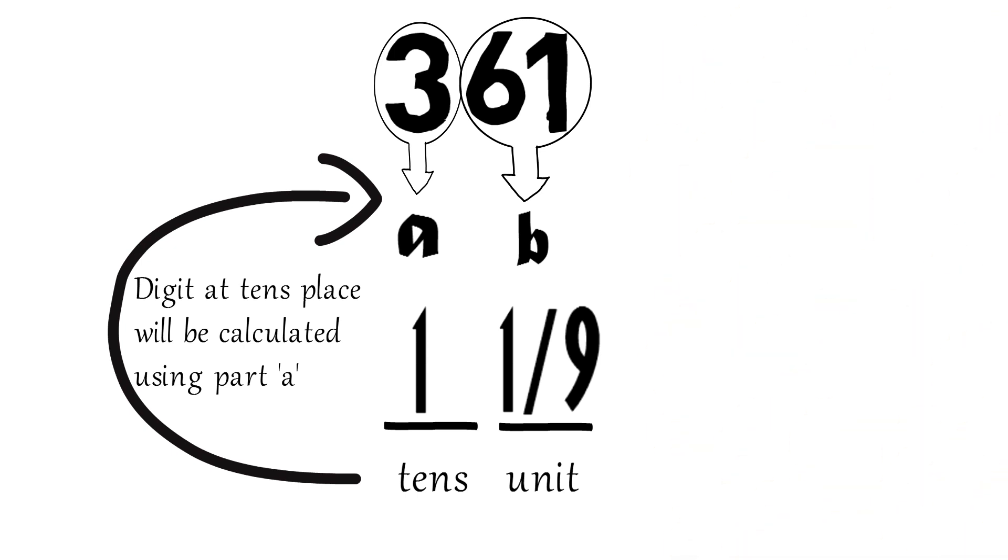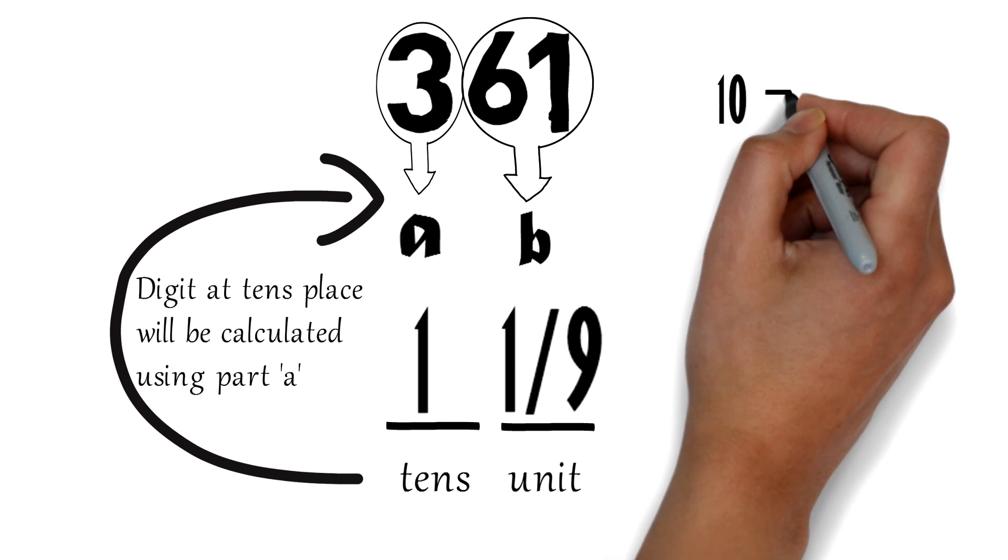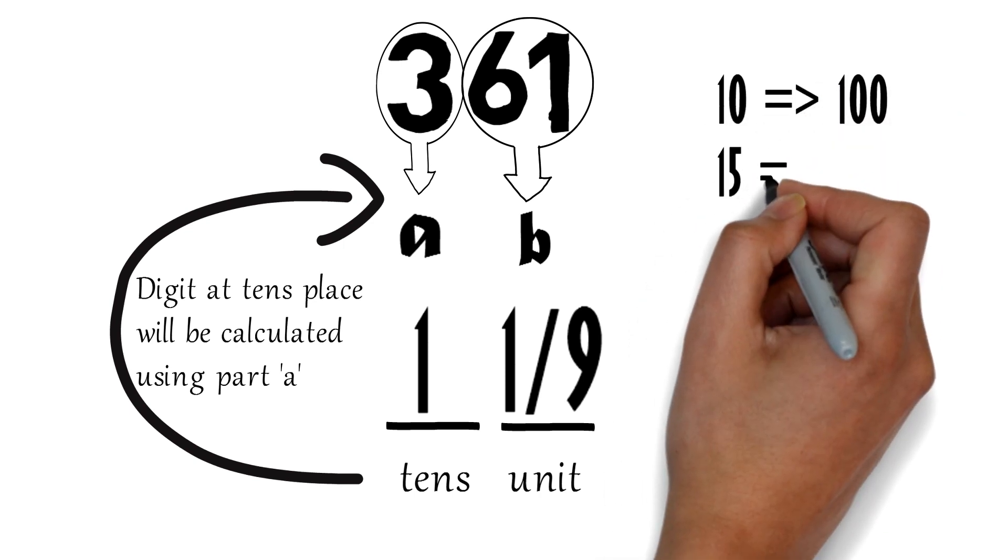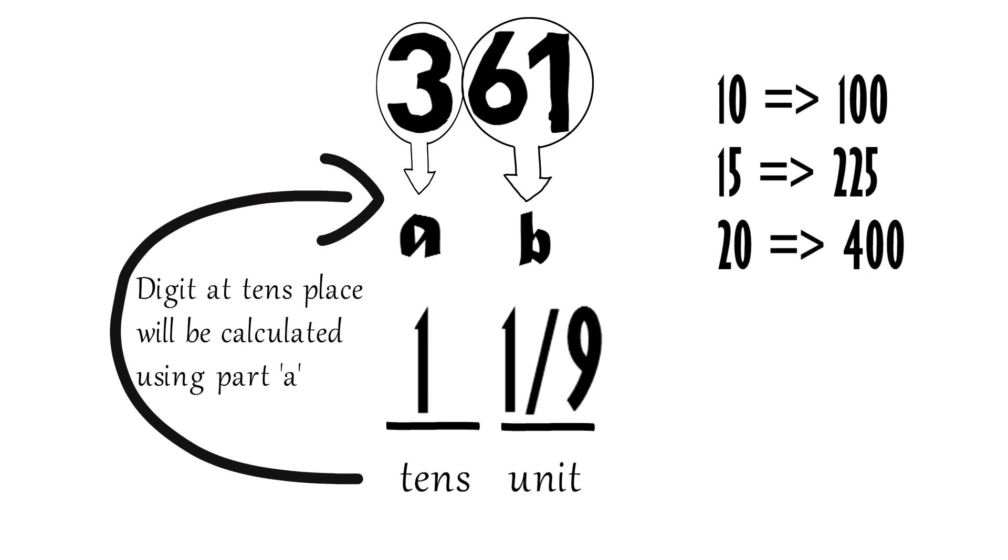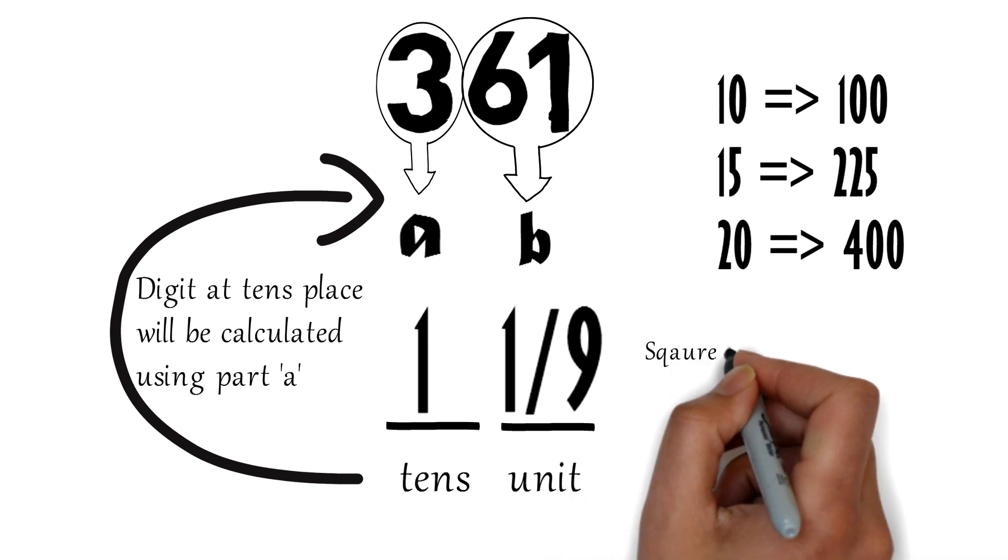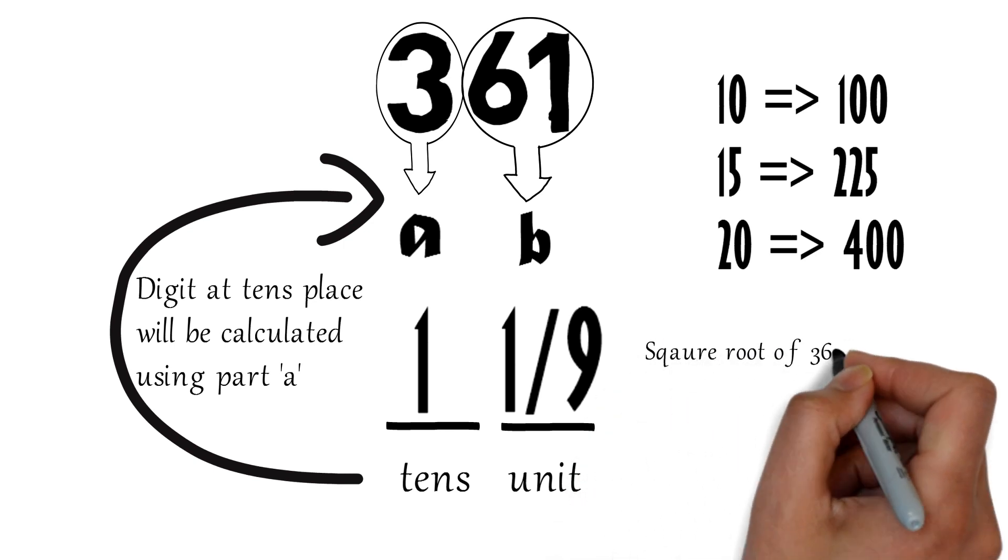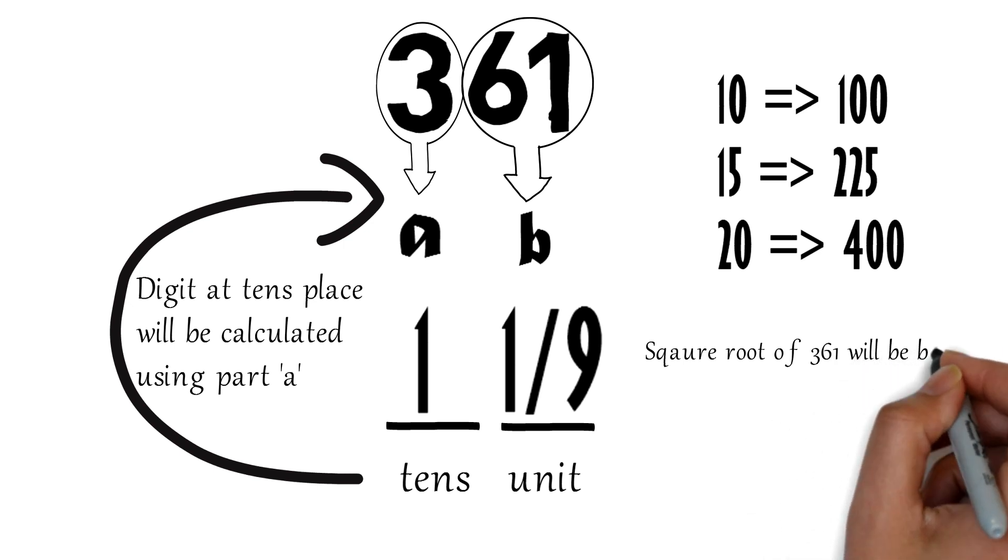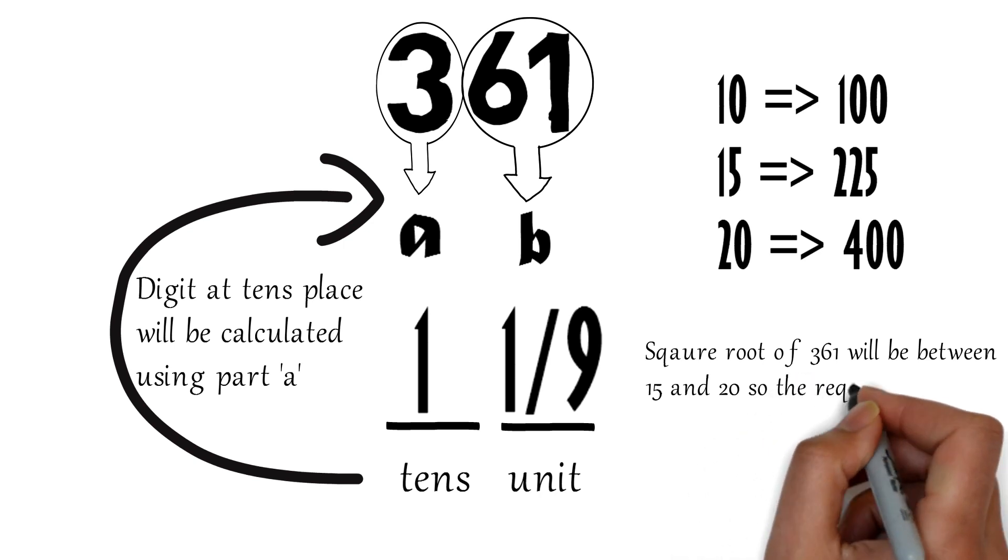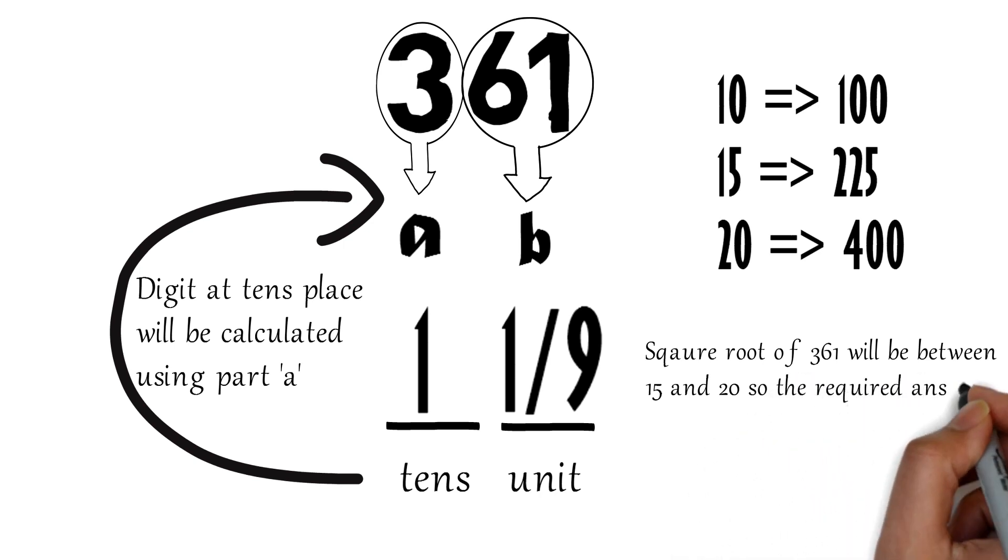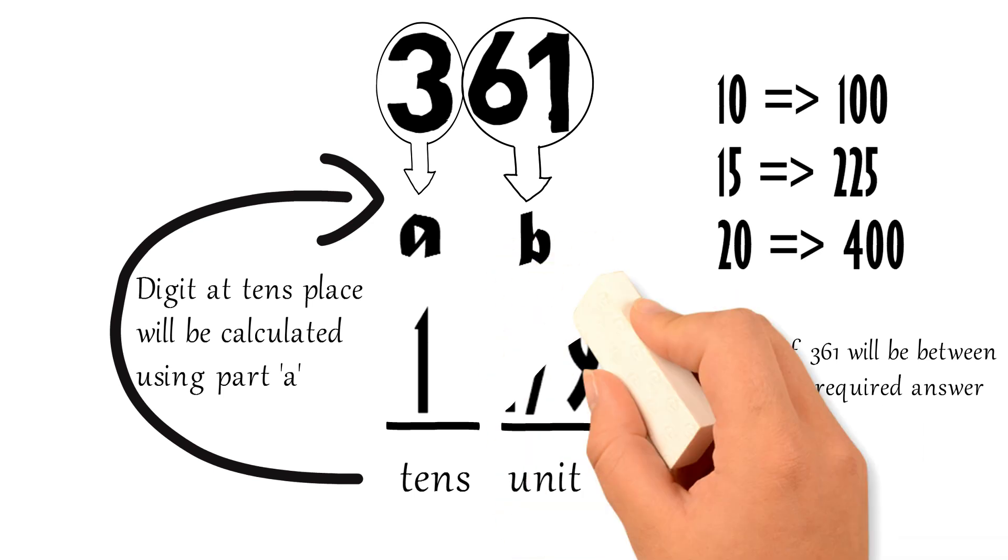To check which one is correct, you are required to have slight knowledge of some basic square roots. For example, the square of 10 is 100, 15 is 225, and 20 is 400. Now if the square root of 361 is 11, it must be between the square root of 10 and 15, which is not the case. So the square root of 361 will be 19, as it lies between the square of 15 and 20.